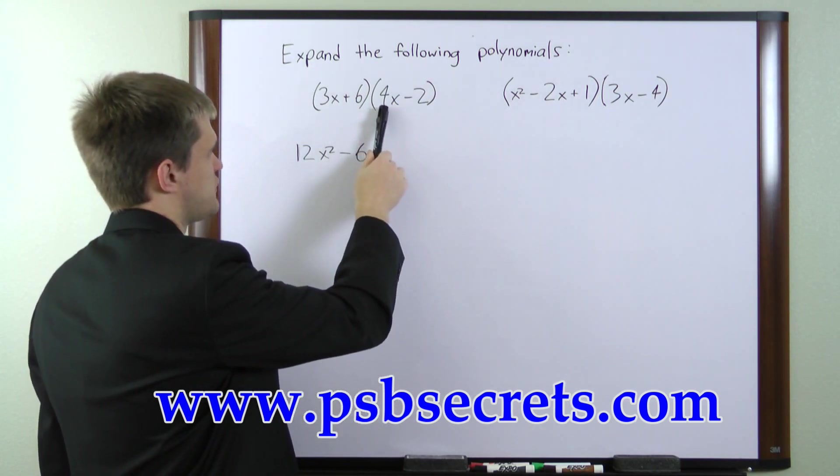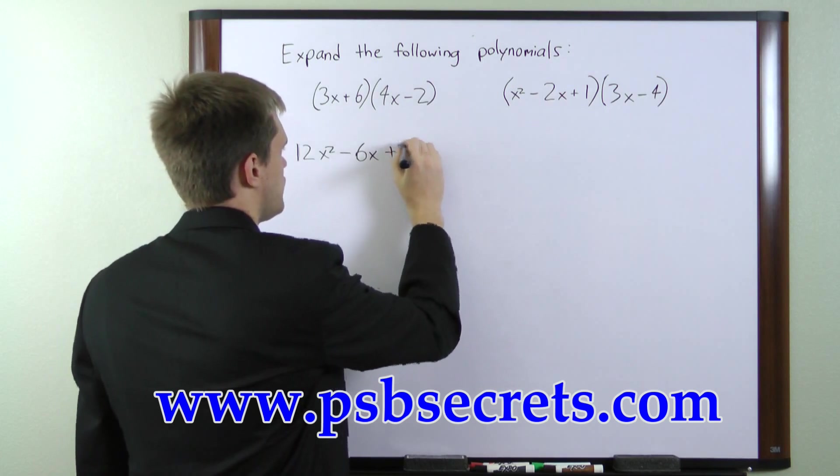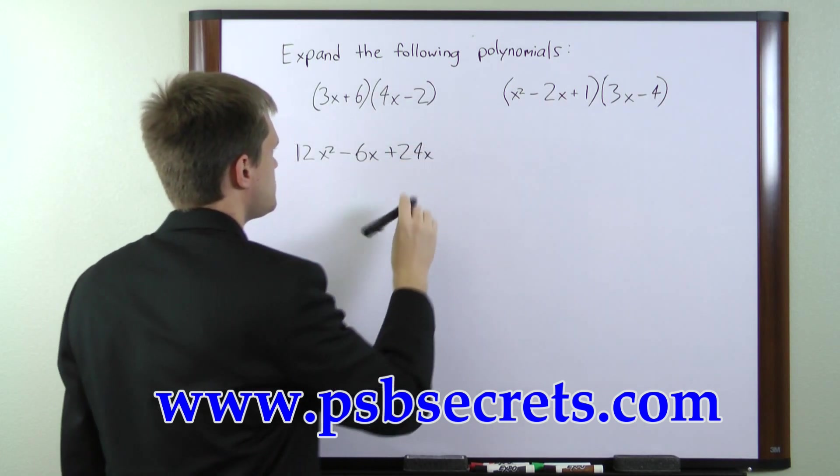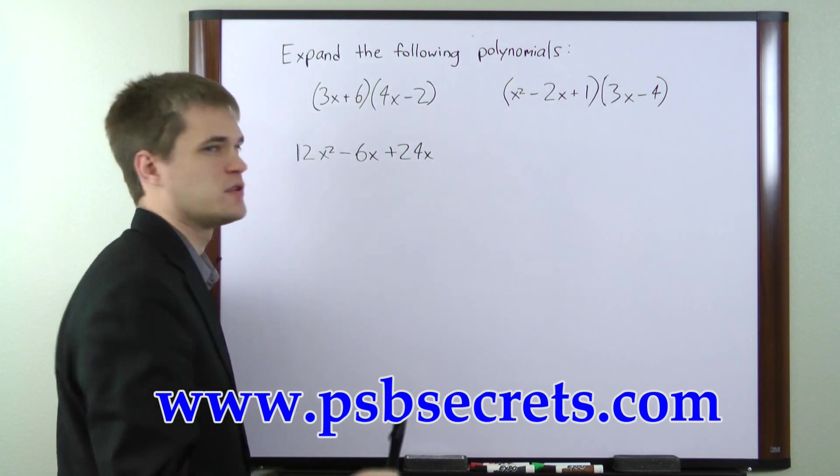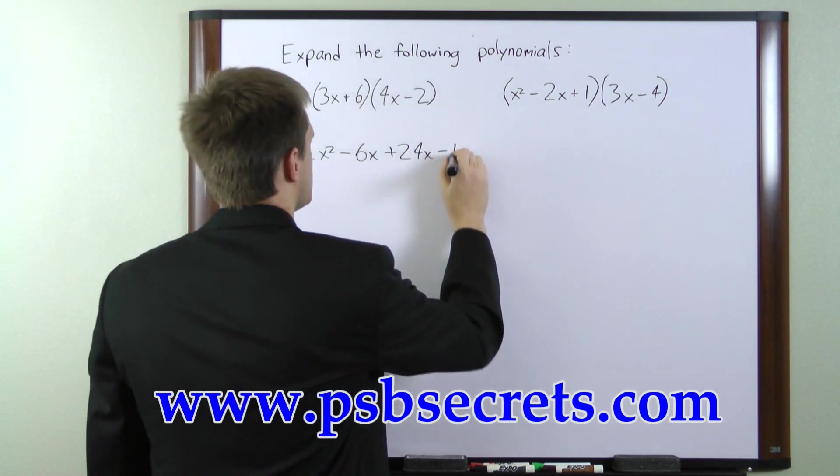The inside pair, 6 times 4x, gives us 24x. And the last pair, 6 times negative 2, gives us minus 12.